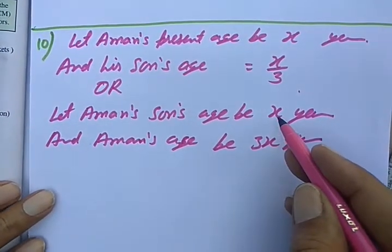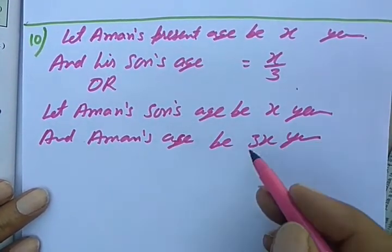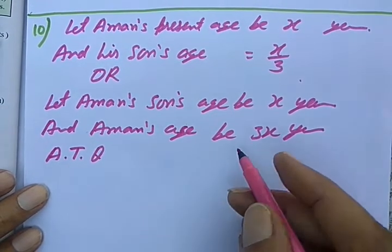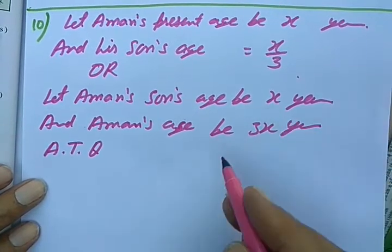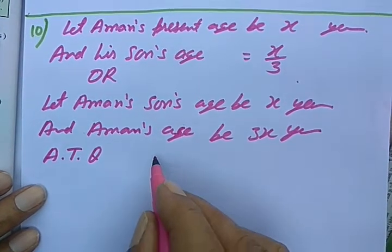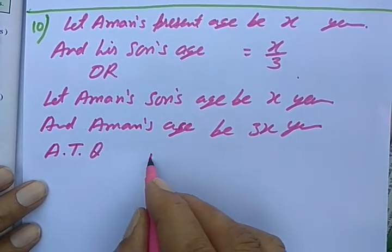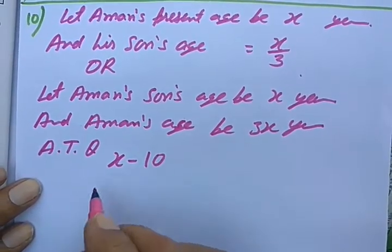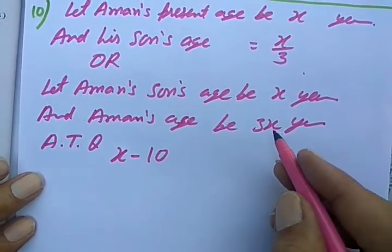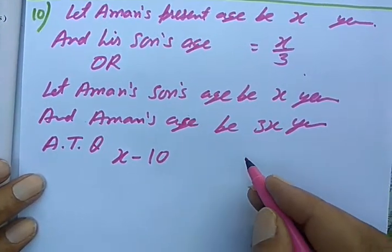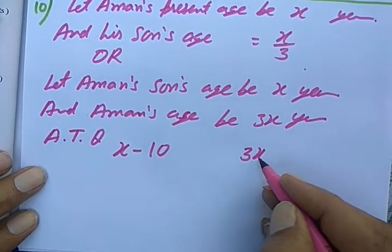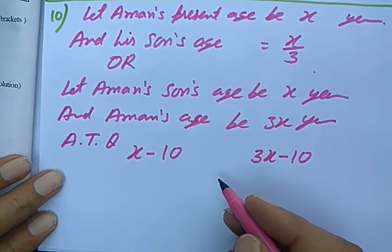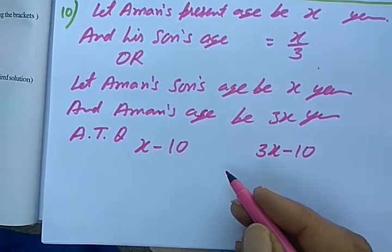Ten years ago, what was his son's age? According to the question's condition, son is now X years. What was his age ten years ago? It was X minus 10. And what was Aman's age ten years ago? It was 3X minus 10. This was the age for both of them ten years ago.